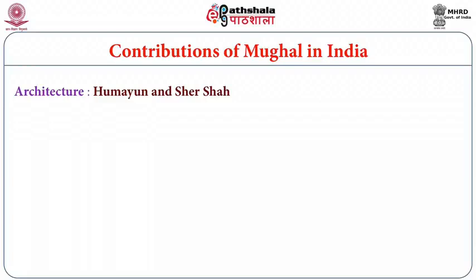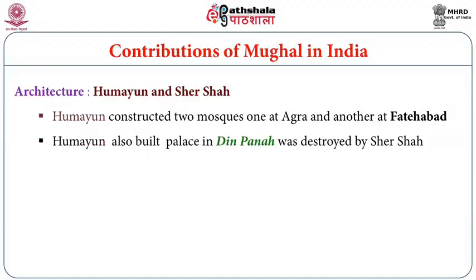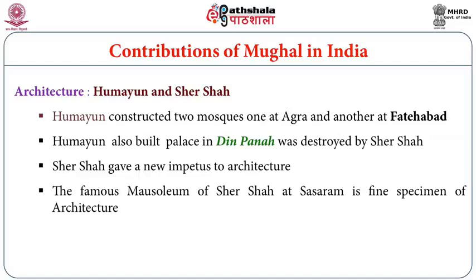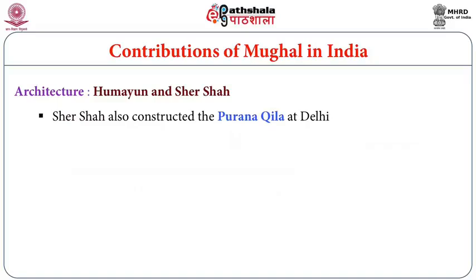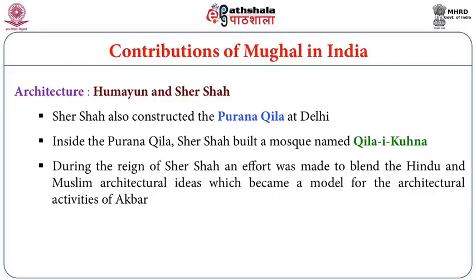Humayun constructed two mosques, one at Agra and another at Fatehabad, and built palaces at Dinpanah, which were later destroyed by Sher Shah. Sher Shah gave a new impetus to architecture — his famous mausoleum at Sasaram is a fine specimen. He also constructed the Purana Qila at Delhi, inside which he built a mosque named Qila-i-Kuhna Masjid. Sher Shah's efforts to blend Hindu and Muslim architectural ideas became a model for Akbar's architectural activities.